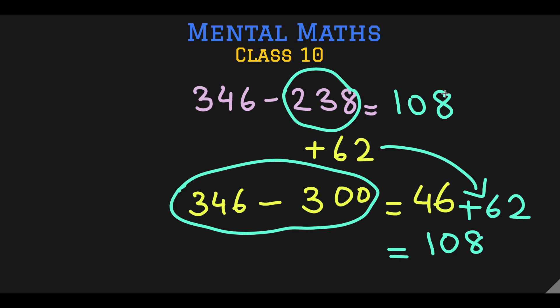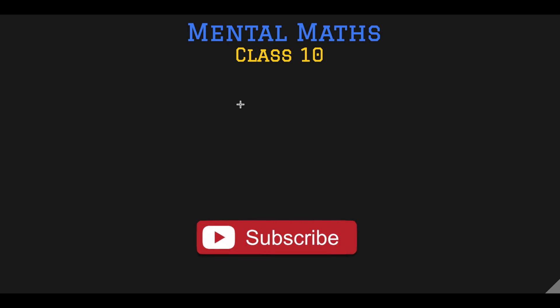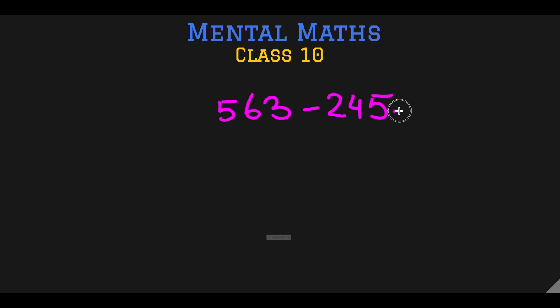Let's use method 2 again to solve a three-digit subtraction question. The question is 563 minus 245. What do we add to the number that we are subtracting, that is 245, to make it a multiple of 100? We need to add 55 to it. Now you have to remember this 55. Don't forget about it.